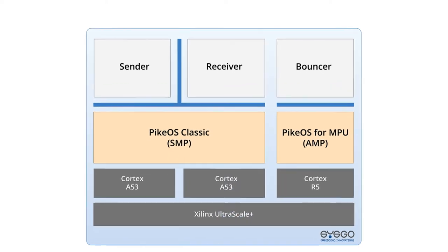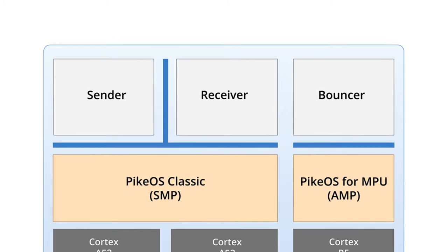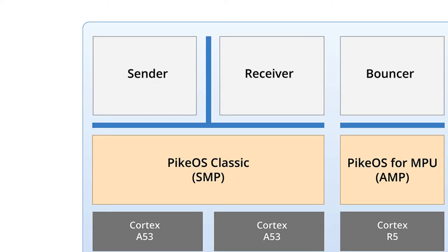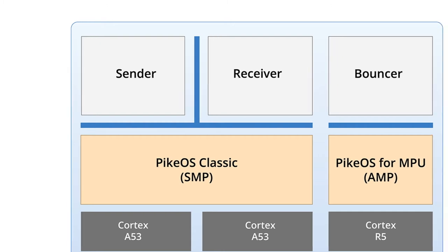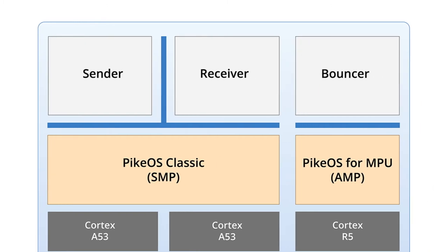We have developed three example applications: the sender, the receiver, and the bouncer. Sender and receiver are running on PyQoS Classic, while the bouncer is running on PyQoS for MPU.